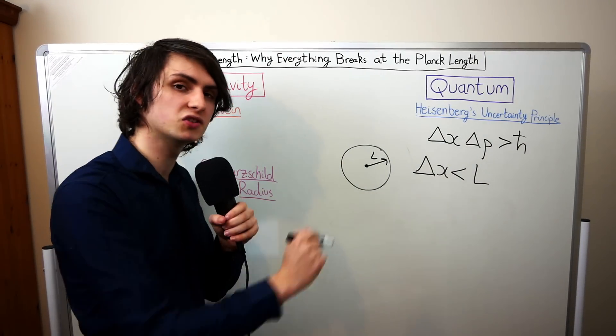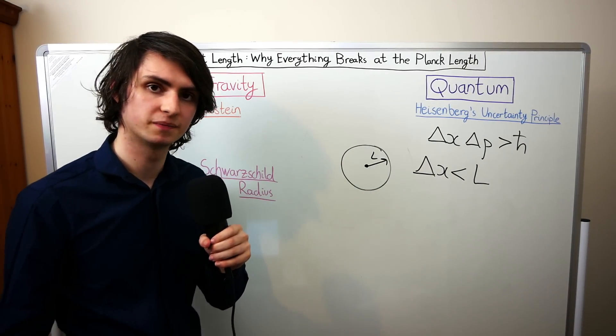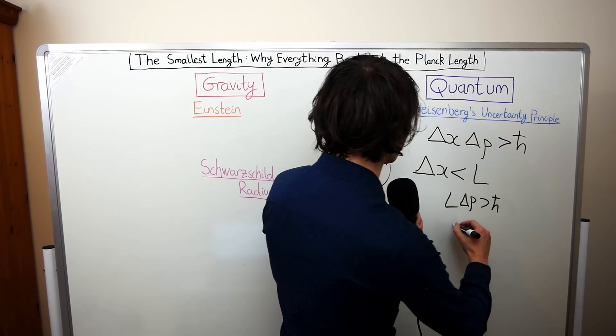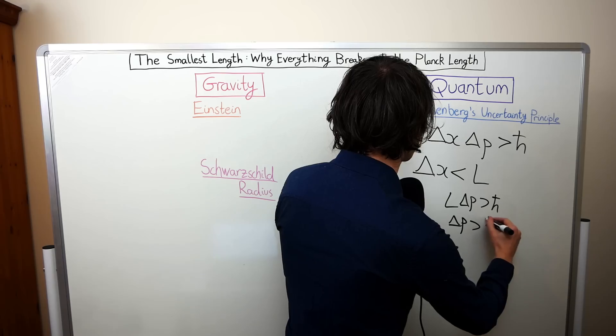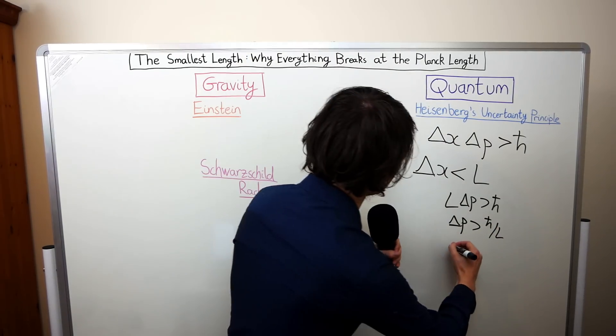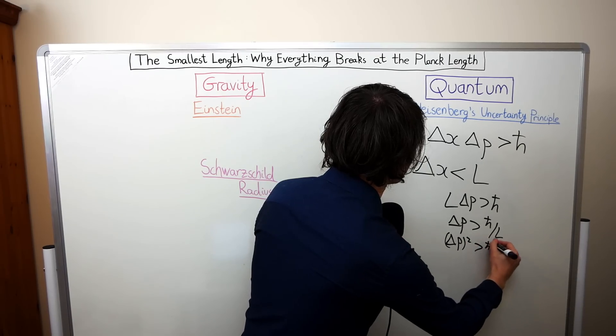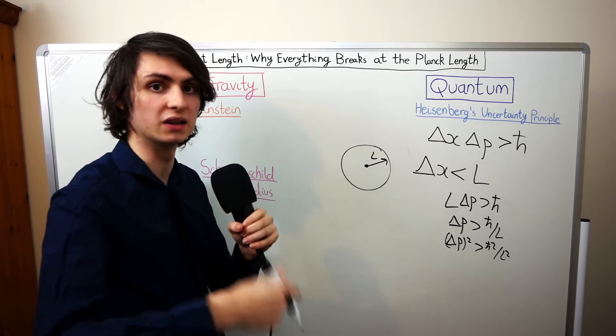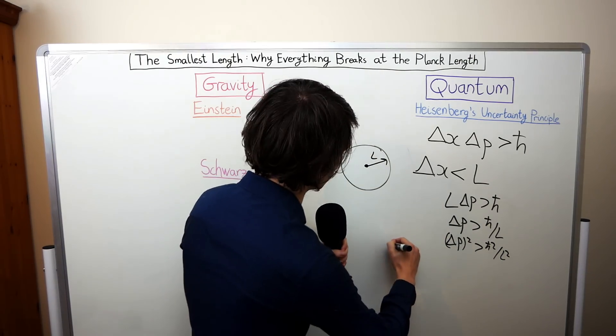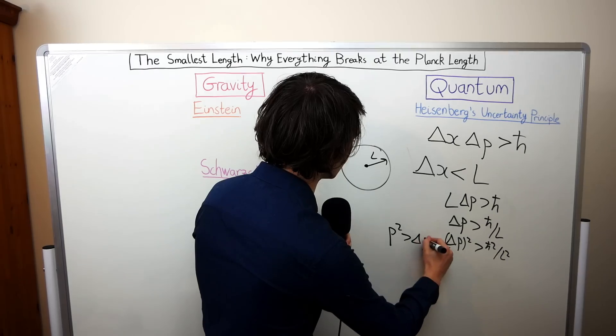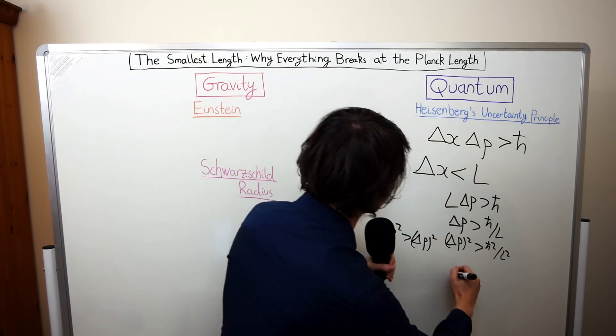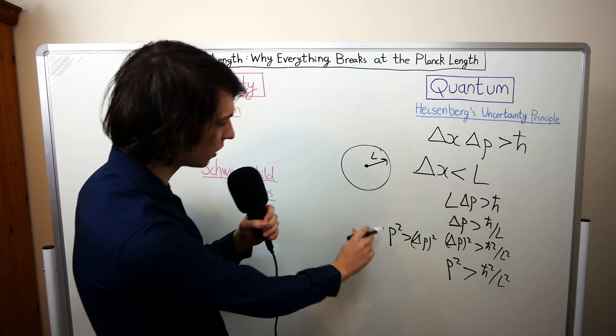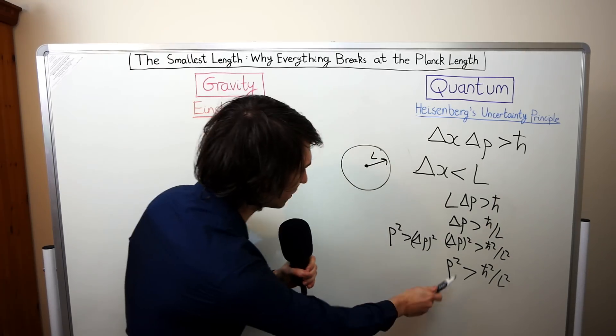We can substitute this requirement into the uncertainty principle to get a relation involving momentum. So if we do this we get L delta p is larger than h bar. Rearranging this a bit we get that delta p has got to be larger than h bar over L. Squaring both sides we can write delta p squared is larger than h bar over L squared. Now because the mean value of momentum squared will always be larger than the uncertainty of momentum squared, in mathematical terms we have that p squared is larger than delta p squared. Now we can rewrite this as p squared has got to be larger than h bar squared over L squared. If you didn't quite follow this last step it doesn't really matter. The key point is this relation here.